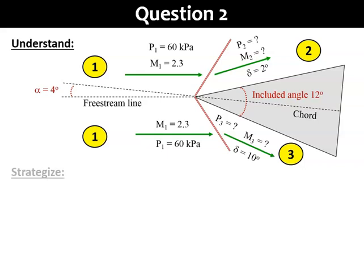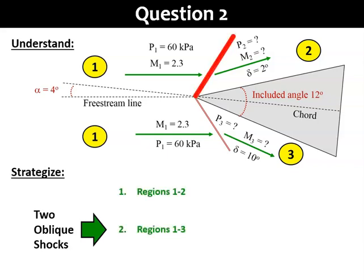If we look at the strategy in a bit more detail, we need to handle the two oblique shocks separately. Let's label the two cases based on the regions across the shocks. So, for the first shock, we'll label that as regions 1 to 2, and the second shock as regions 1 to 3. For each of the cases, we'll transform them into a normal shock problem, by finding the normal component of the Mach number, Mn1 equals to M1 sine beta.